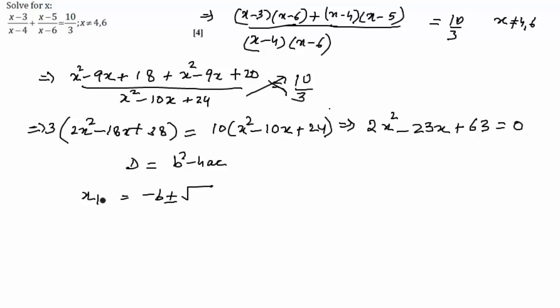plus minus d upon 2a. Putting the value, we'll show the calculations, and we'll get the value of x as 7 or x as 9 by 2. We'll put the values and show this calculation in the example.